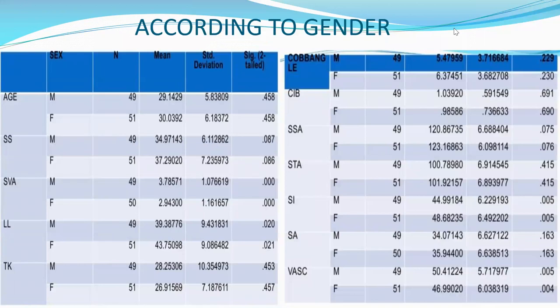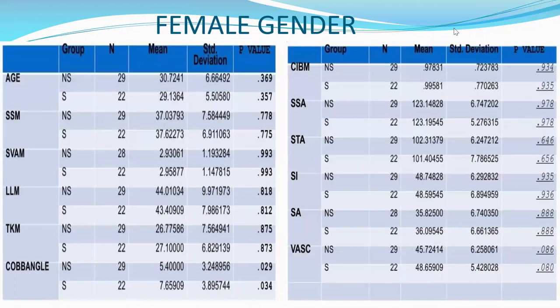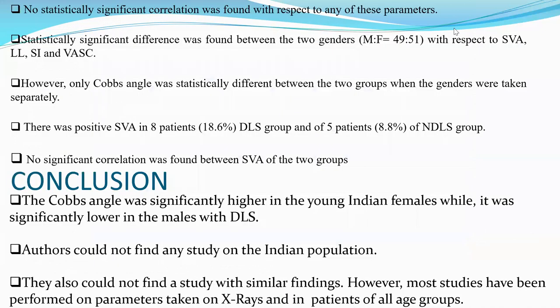Parameters were recorded according to gender and presented in tabular form, including data for female patients. No statistically significant correlation was found with respect to any of the parameters between the DLS and NDLS groups. However, a statistically significant difference was found between the two genders (male:female = 49:51) with respect to SVA, lumbar lordosis, sacral inclination, and vertical angle of sacral curvature. Only the Cobb angle was statistically different between the two groups when genders were analyzed separately. There was positive SVA in 8 patients (18.6%) of the DLS group and 5 patients (8.8%) of the NDLS group, with no significant correlation found between SVA of the two groups.